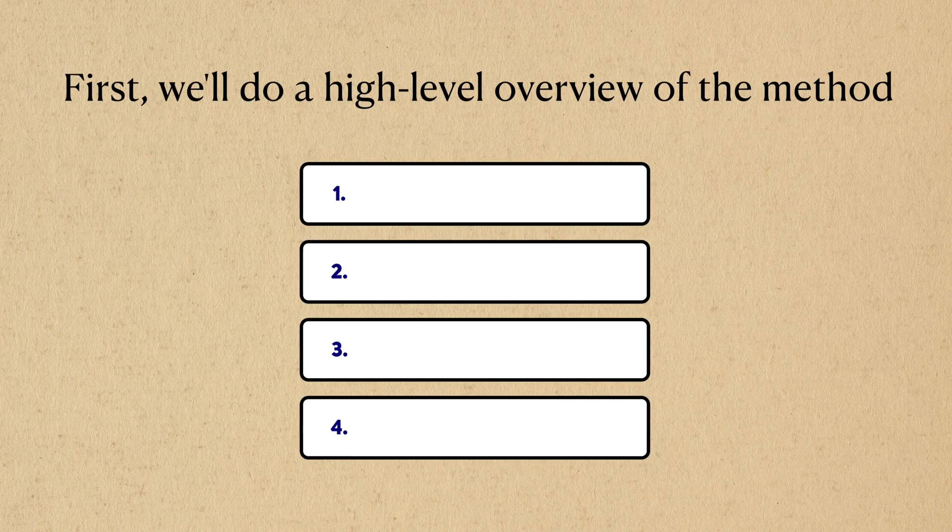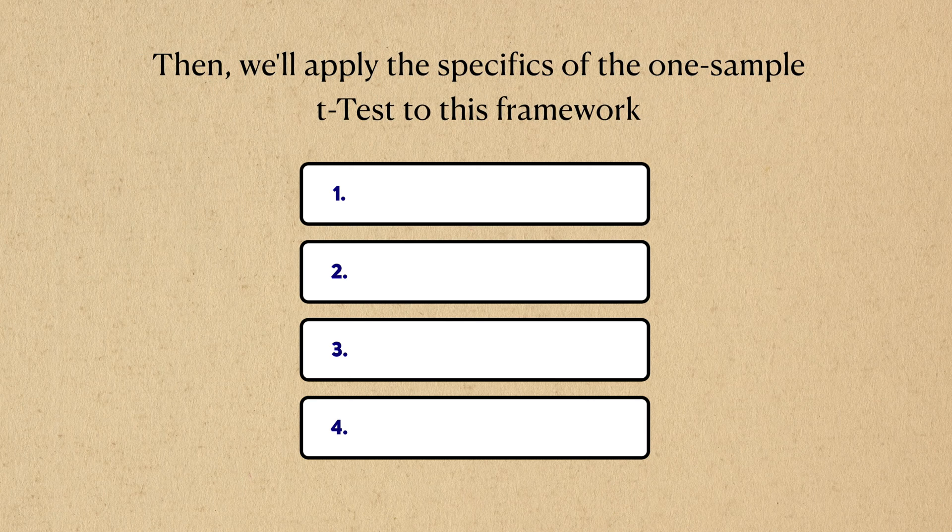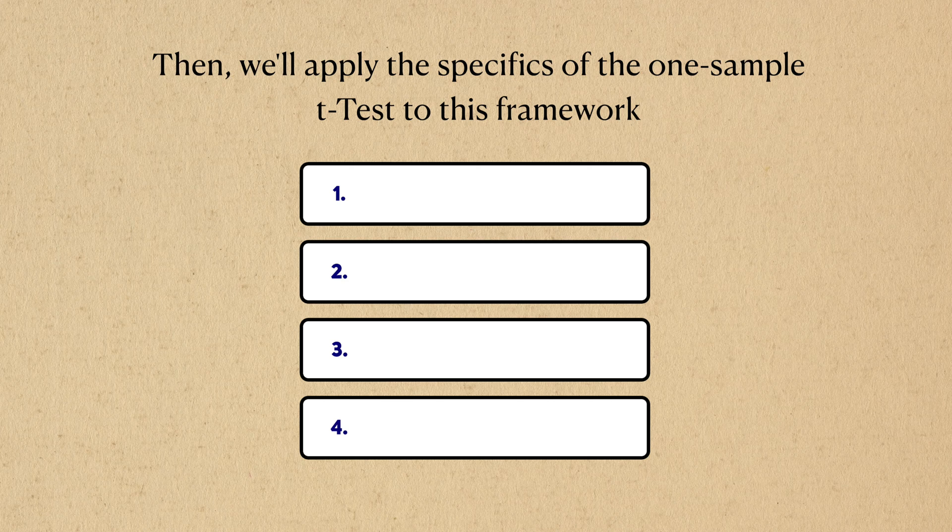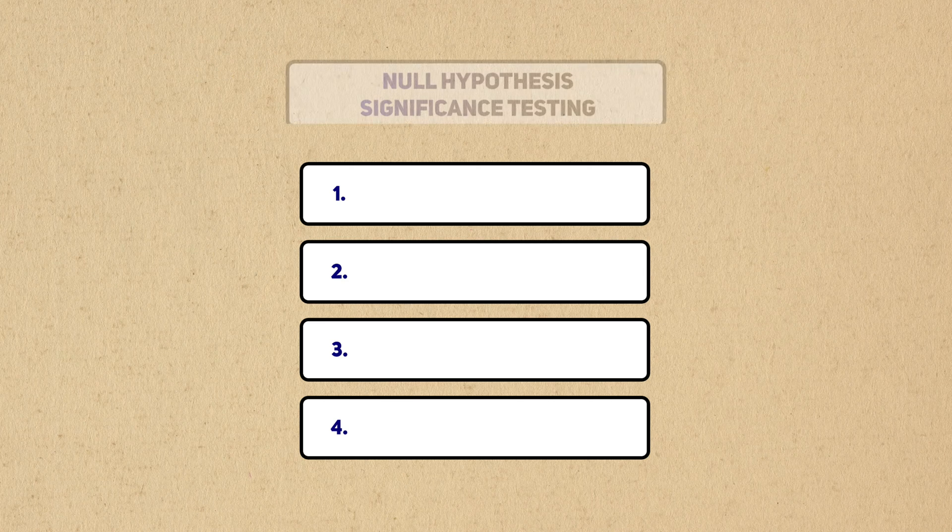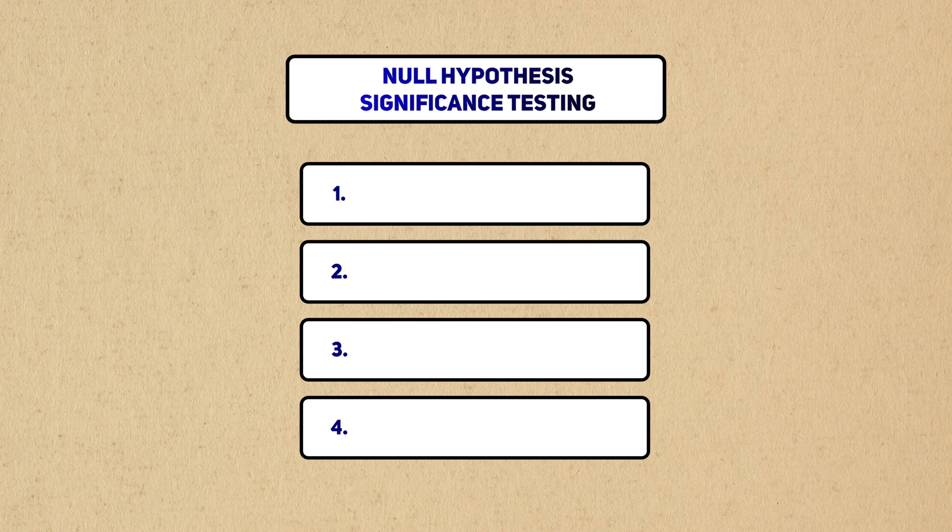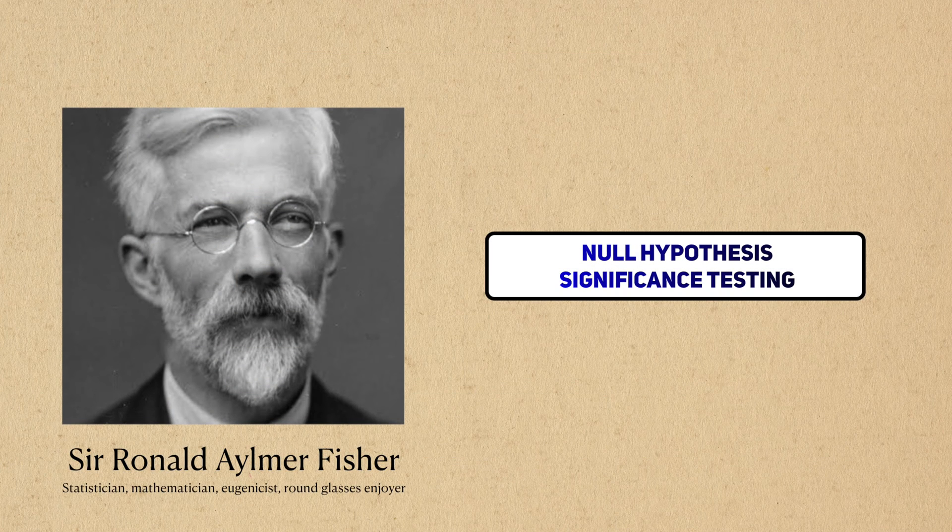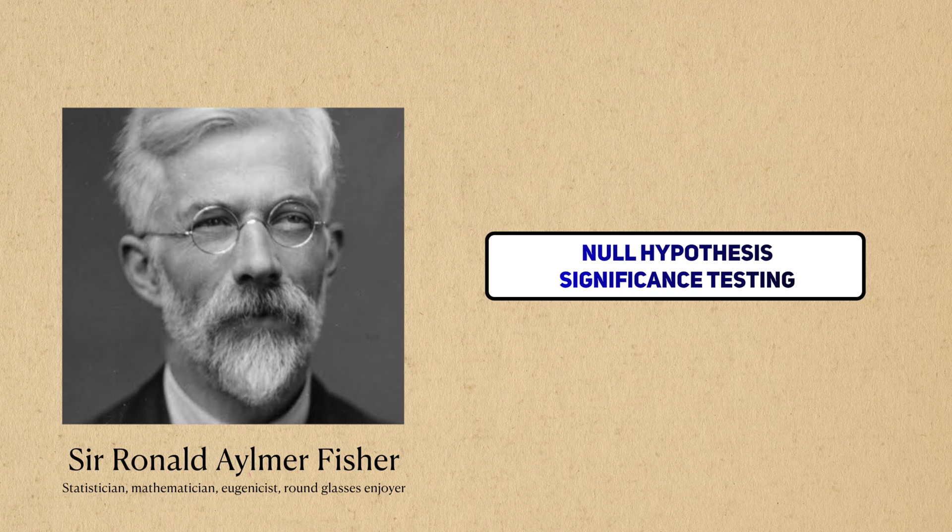We'll start by learning a high-level overview of the method we'll be using to make data-driven decisions. After introducing this method, we'll dive into how the specific details of the one-sample t-test apply to this method. The method we'll be learning is called the null hypothesis significance testing framework, which we'll just abbreviate NHST. This method was invented by Sir Ronald Fisher, one of the most prominent and controversial figures in statistics.